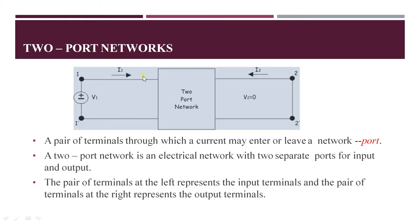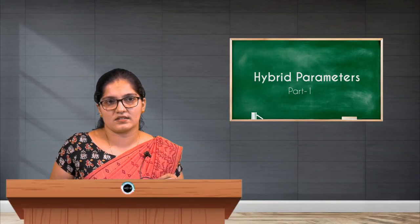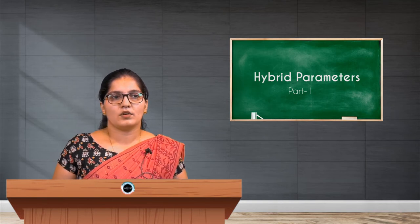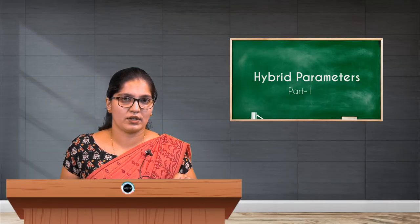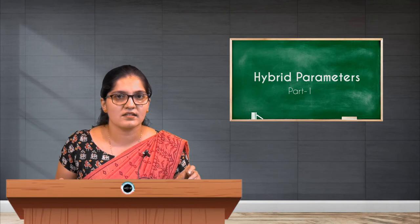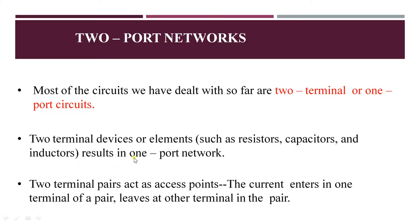The pair of terminals on the left represents the input terminal and the pair on the right represents the output terminals — this is the input port and this is the output port. Most circuits we have dealt with so far are two-terminal or one-port circuits. Today we are going to see a network which contains two ports, meaning there are four terminals — one input side and one output side.